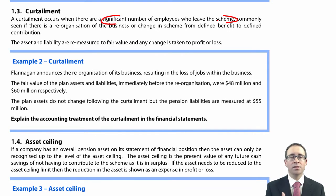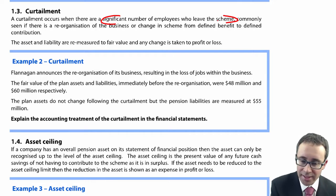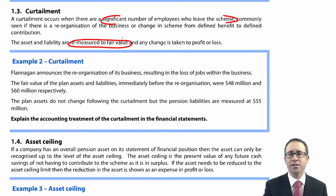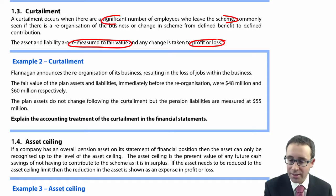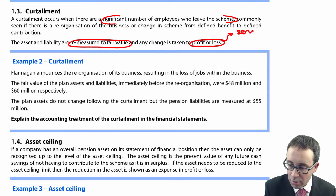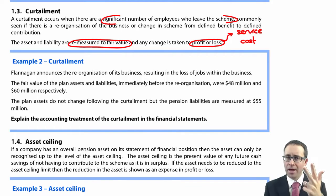If you can identify the curtailment, explain that you have identified it, and then explain the accounting treatment. All the curtailment requires is that both the asset and liability are re-measured to fair value. You reassess the value of the assets and the liabilities. If there is a change — increases or decreases in assets or liabilities — then that is taken to profit or loss, and when it is taken to profit or loss, it is treated there as a service cost. So know what the curtailment is, know the treatment, and then be able to apply it.